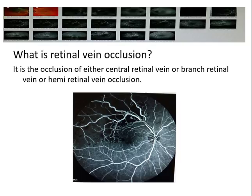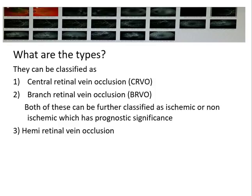In simple terms, a retinal vein occlusion is the occlusion of either the central retinal vein or a branch retinal vein. Sometimes it can be a hemiretinal vein occlusion, where half of the retinal venous circulation is affected. Vein occlusion can be CRVO (central retinal vein occlusion), BRVO (branch retinal vein occlusion), or hemiretinal vein occlusion. It is important to classify these as ischemic or non-ischemic, as this has prognostic significance.